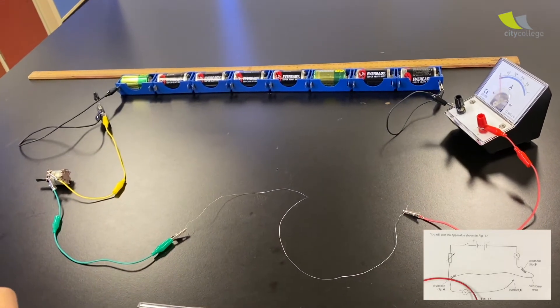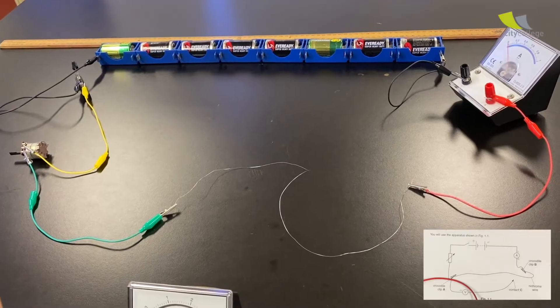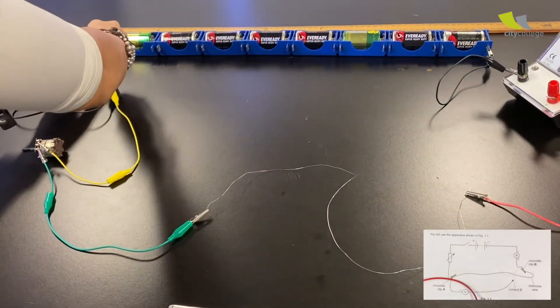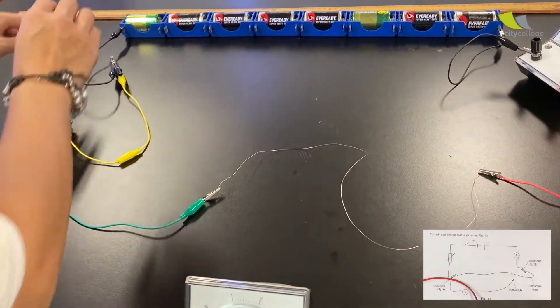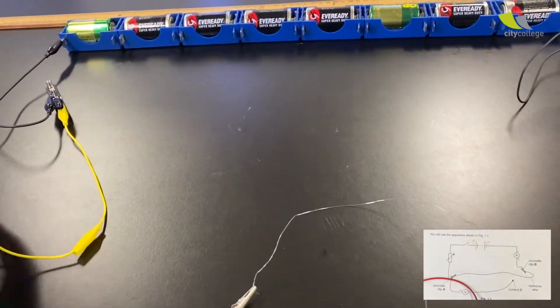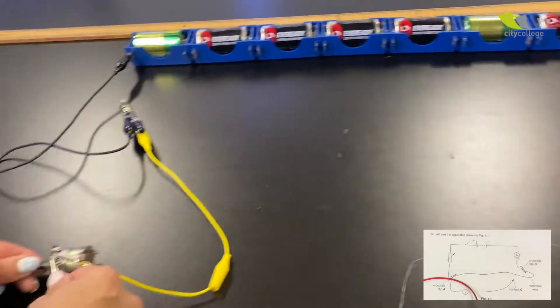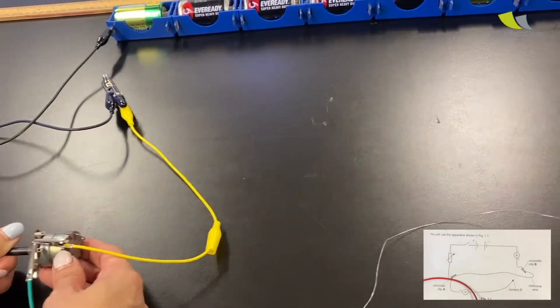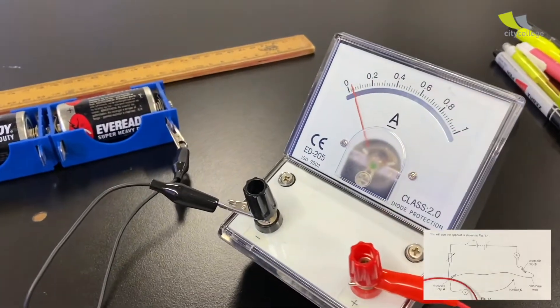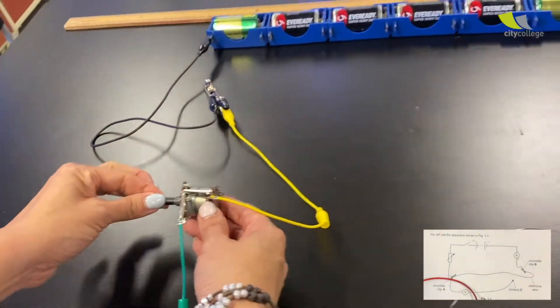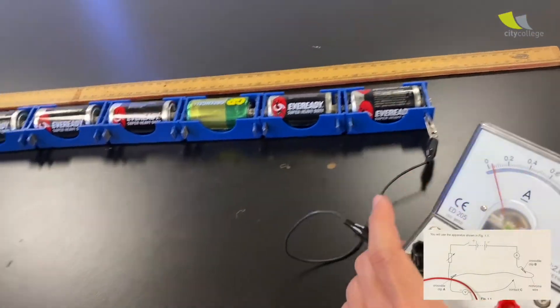So right now over here, you actually already have a closed circuit. Okay. Even without your voltmeter. So you can actually do a test to see if everything is working well. So she's going to turn on the switch. Alright. Turn the variable resistor. See if she gets a reading.